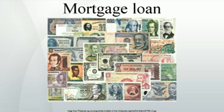Upon making a mortgage loan for the purchase of a property, lenders usually require that the borrower make a down payment — that is, contribute a portion of the cost of the property. This down payment may be expressed as a portion of the value of the property. The loan-to-value ratio, or LTV, is the size of the loan against the value of the property. Therefore, a mortgage loan in which the purchaser has made a down payment of 20% is a loan-to-value ratio of 80%.